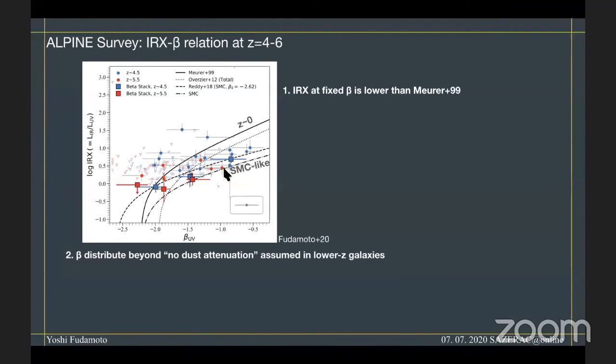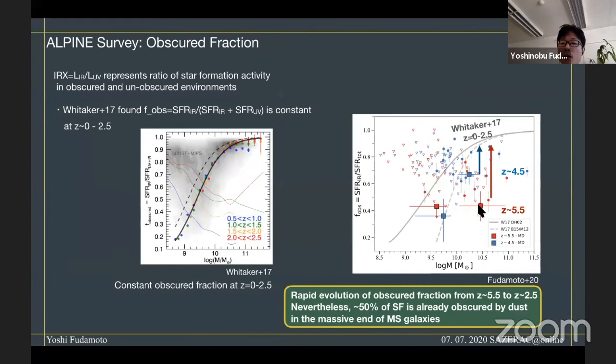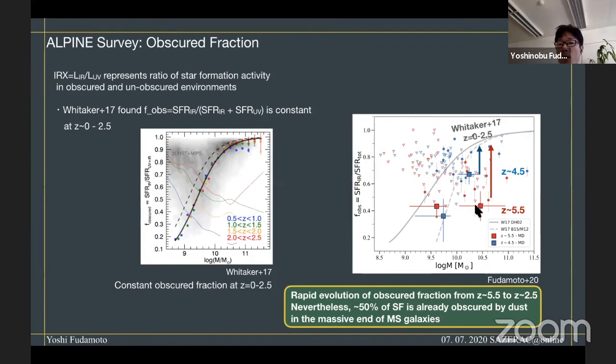There's a question from Rebecca Bowler. In making your IRX-beta relation, did you stack in bins of beta? McClure et al. 2018 showed that stacking this way can cause a bias in the derived relation. Yeah, we tried both stacking based on the stellar mass and beta. In principle, this is the stack in bins of stellar mass. And we also have found a very low amount of infrared luminosity of these galaxies. So this low IRX is pretty much consistent both from stacking in bins of stellar mass and beta.